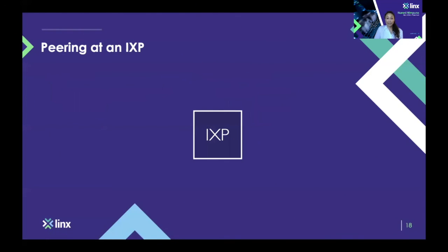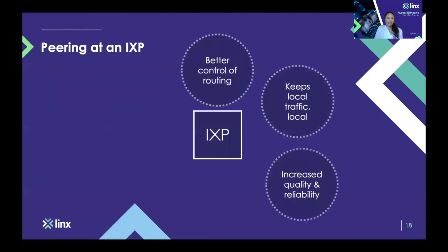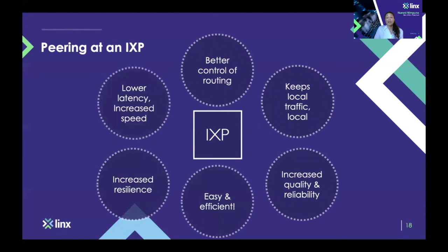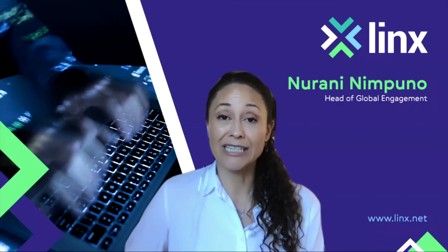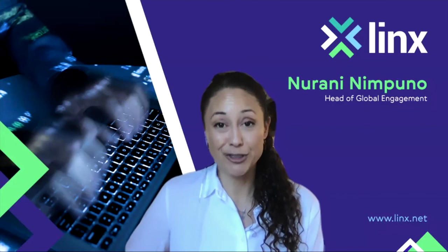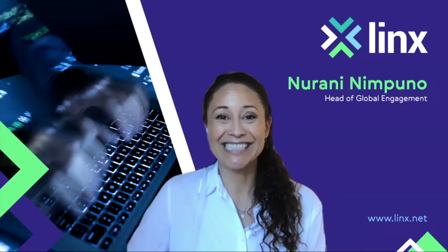So that was a short summary of what peering at an Exchange Point is. It allows you to gain better control of your routing, helps keep local traffic local, helps increase the performance of your network, and is a very easy and efficient way of exchanging traffic. That was my short introduction to what an Internet Exchange Point is — I hope you enjoyed it. Thank you very much, and goodbye.